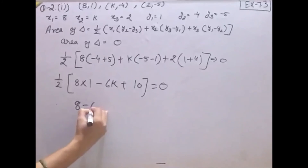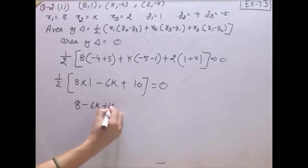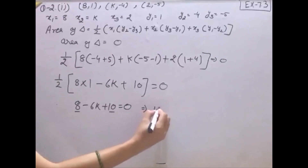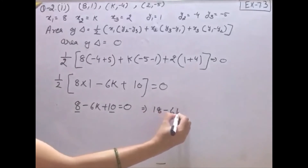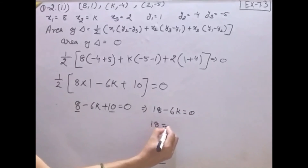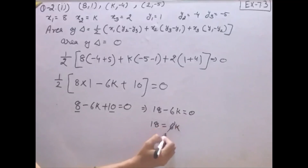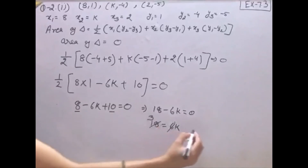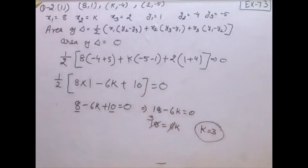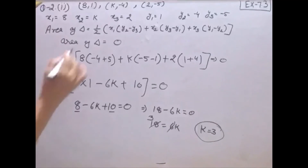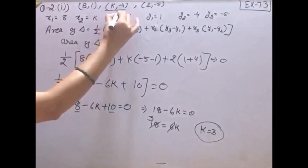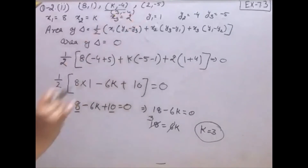Solve करेंगे: eight + ten = eighteen, तो eighteen − 6k = 0। Eighteen = 6k, six से cancel out करेंगे, यह आएगा three। K की value आजाएगी three। तो जो vertices हैं उनमें k = 3 और −4, that's it।